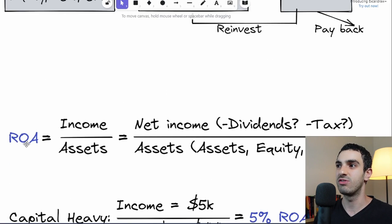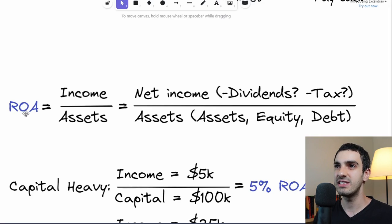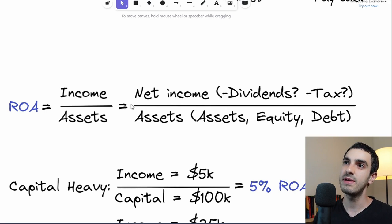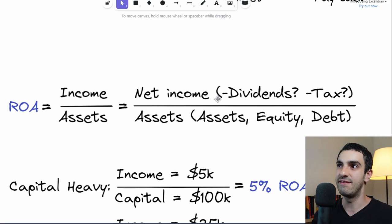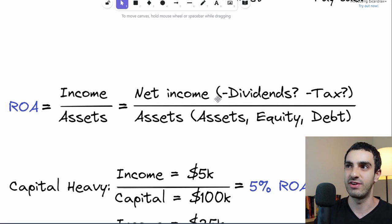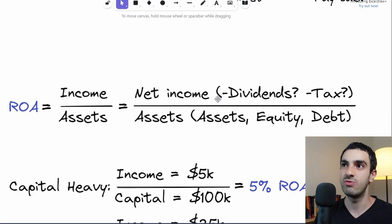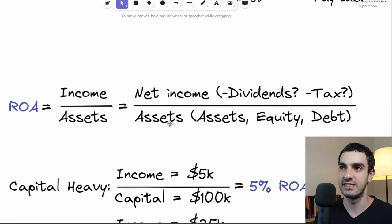The first ratio I want to look at is Return on Assets. Return on Assets is calculated by taking the income divided by the assets. In this case it's typically the net income minus dividends if they exist, and minus taxes — though that depends on the scenario. Some people calculate Return on Assets with taxes included. In a general picture, we get the net income divided by all the assets.